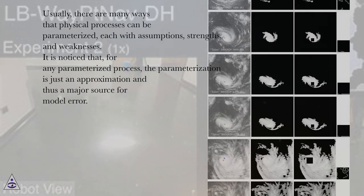Usually, there are many ways that physical processes can be parameterized, each with assumptions, strengths, and weaknesses. It is noticed that, for any parameterized process, the parameterization is just an approximation and thus a major source for model error.